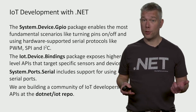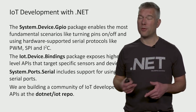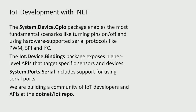We have two NuGet packages that you can use. One is System.Device.GPIO, which enables all the fundamental scenarios you would care about, like turning pins on or off or using specific hardware-supported protocols like GPIO, SPI, and I2C. The IoT.Device.Bindings package exposes higher-level APIs that target specific devices — this is probably the one you'll want to use because it's much easier. For example, there'll be a class for a specific temperature sensor, and all you need to do is call specific APIs to get the temperature or humidity.